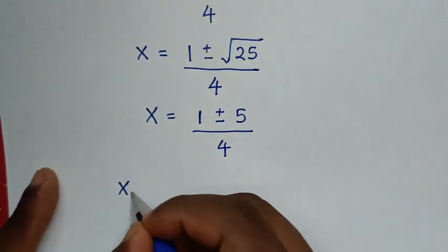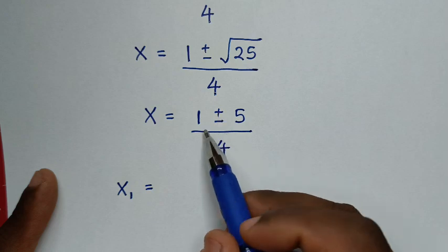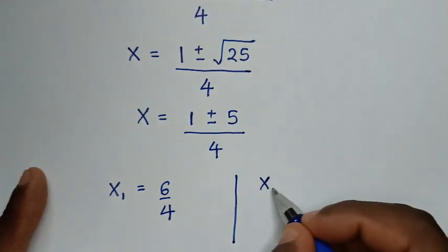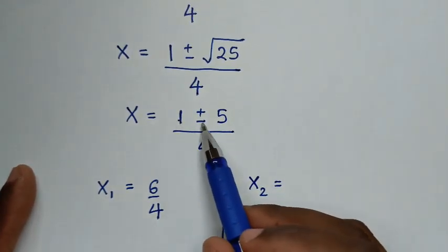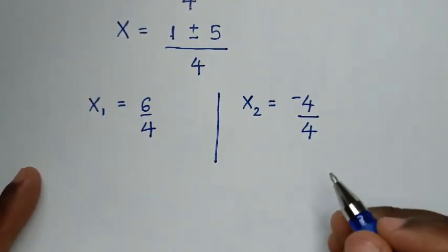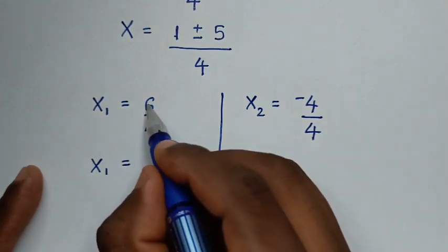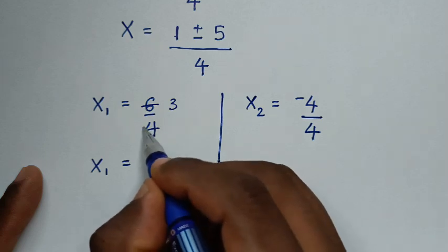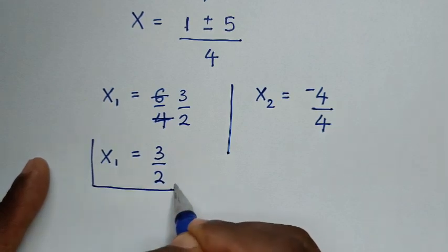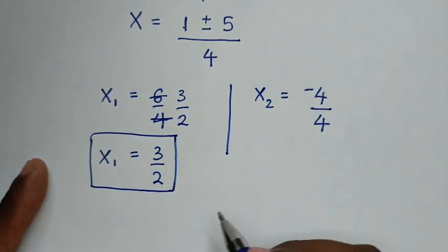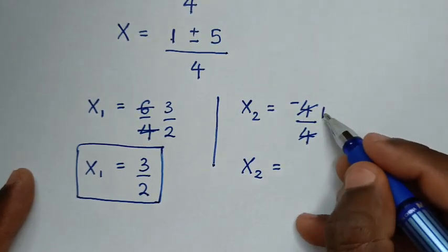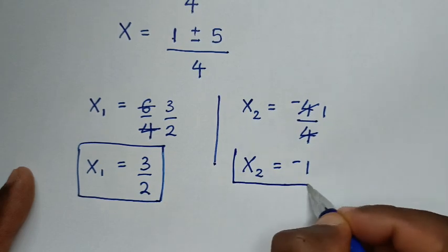We have two solutions. The first value: x equals 1 plus 5 over 4, which is 6 over 4, simplifying to 3 over 2. The second value: x equals 1 minus 5 over 4, which is negative 4 over 4, simplifying to negative 1. So x₁ equals 3/2 and x₂ equals negative 1.